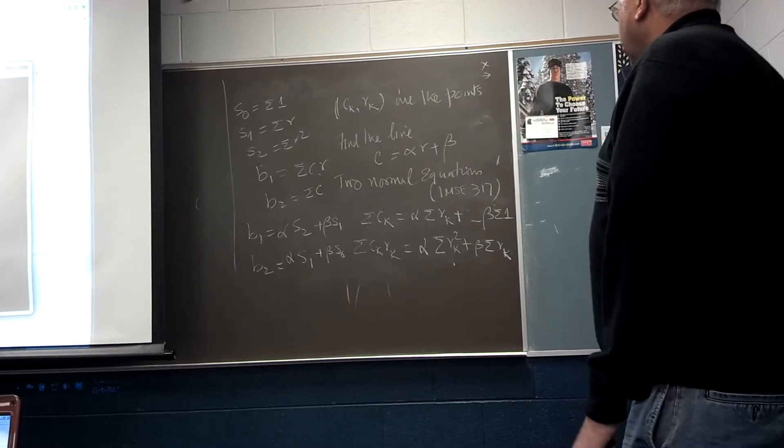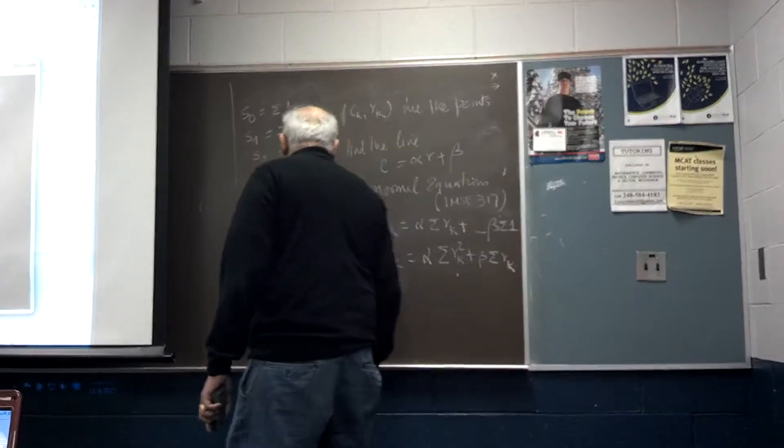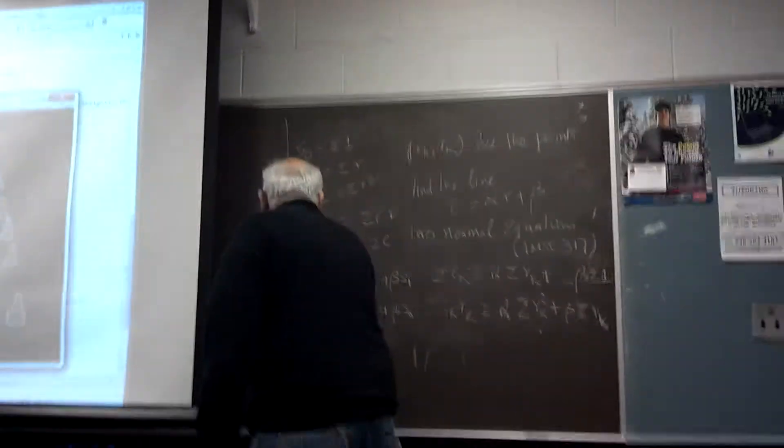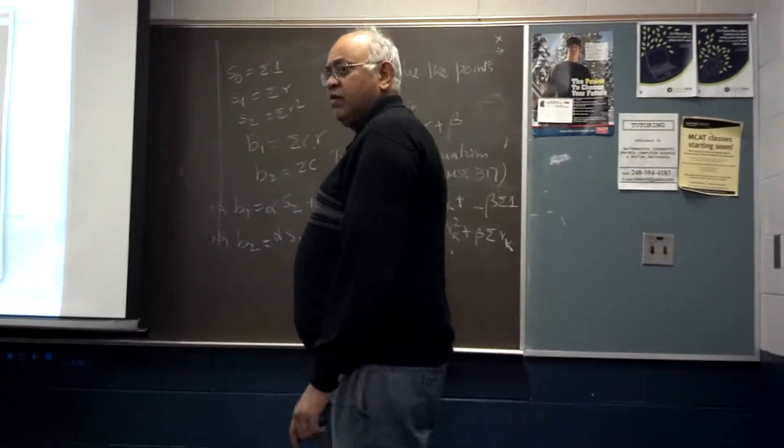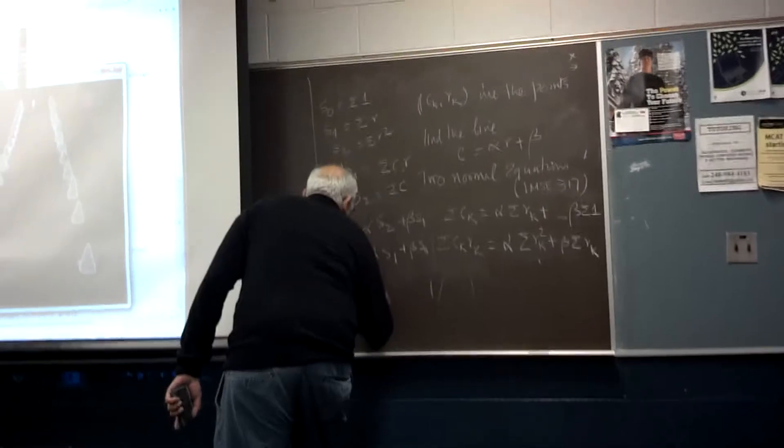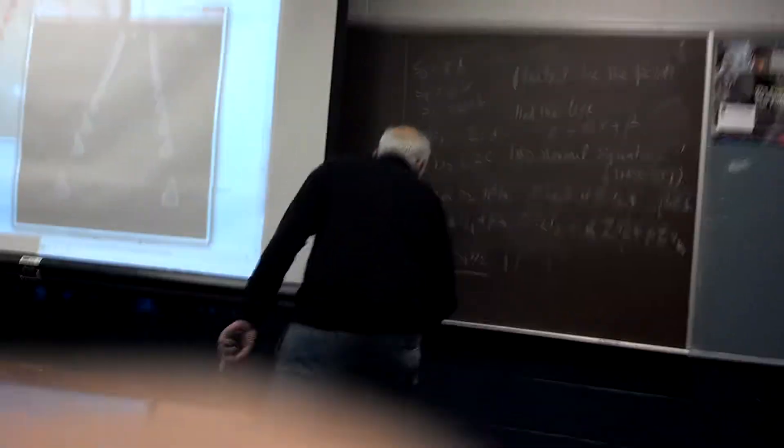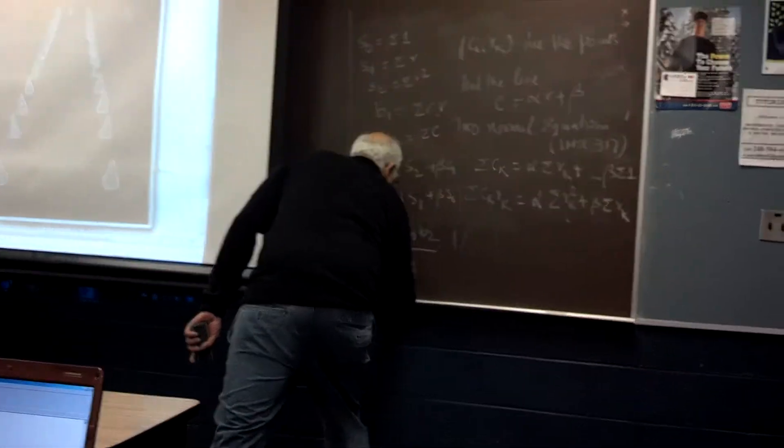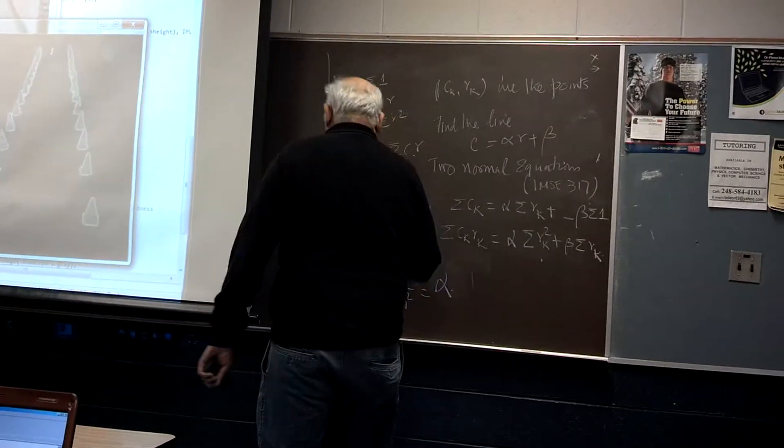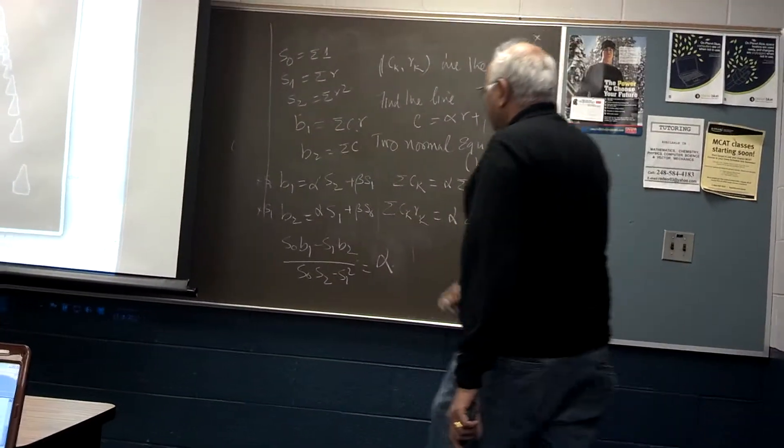And then to solve this, the easiest is what? Multiply this by S0, multiply this by S1 and subtract. So I'm going to get S0 B1 minus S1 B2 divided by S0 S2 minus S1 squared, and that should be alpha. There's a mistake, stop here.